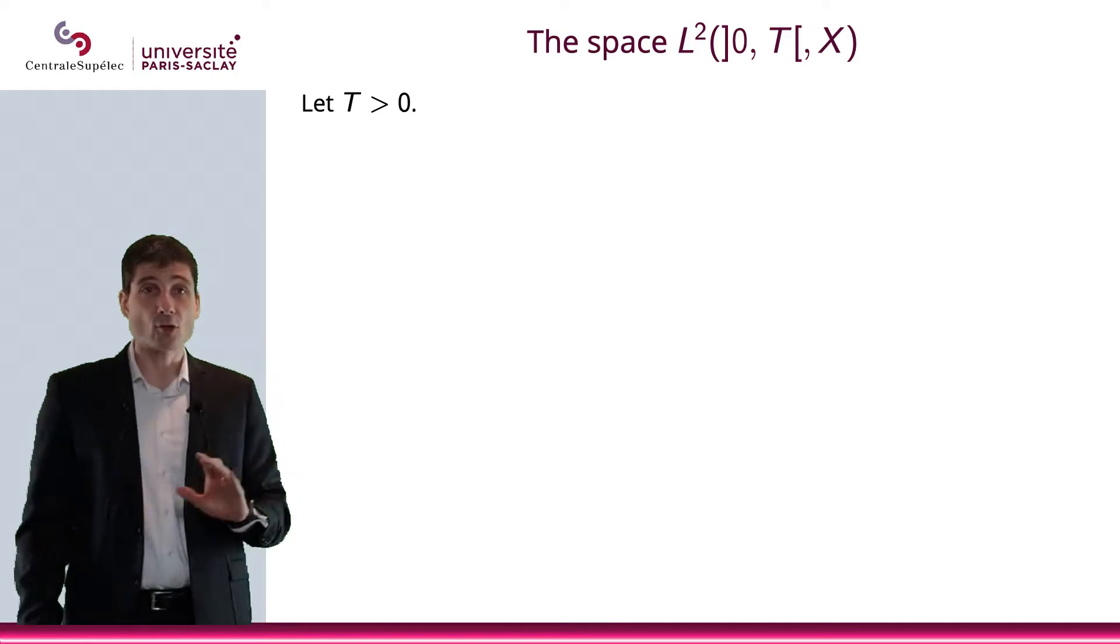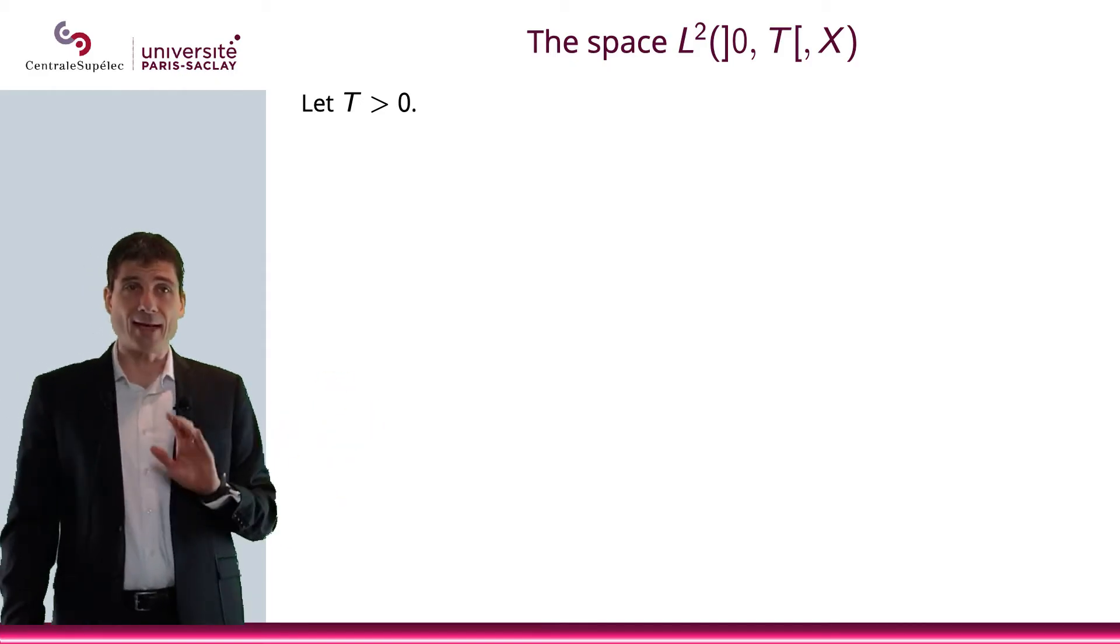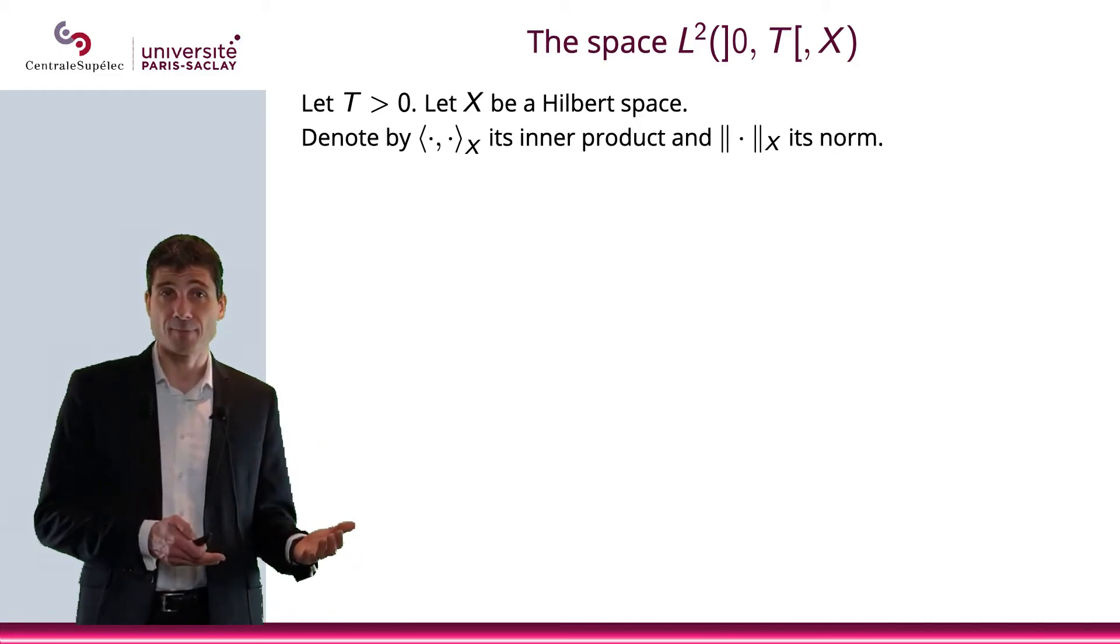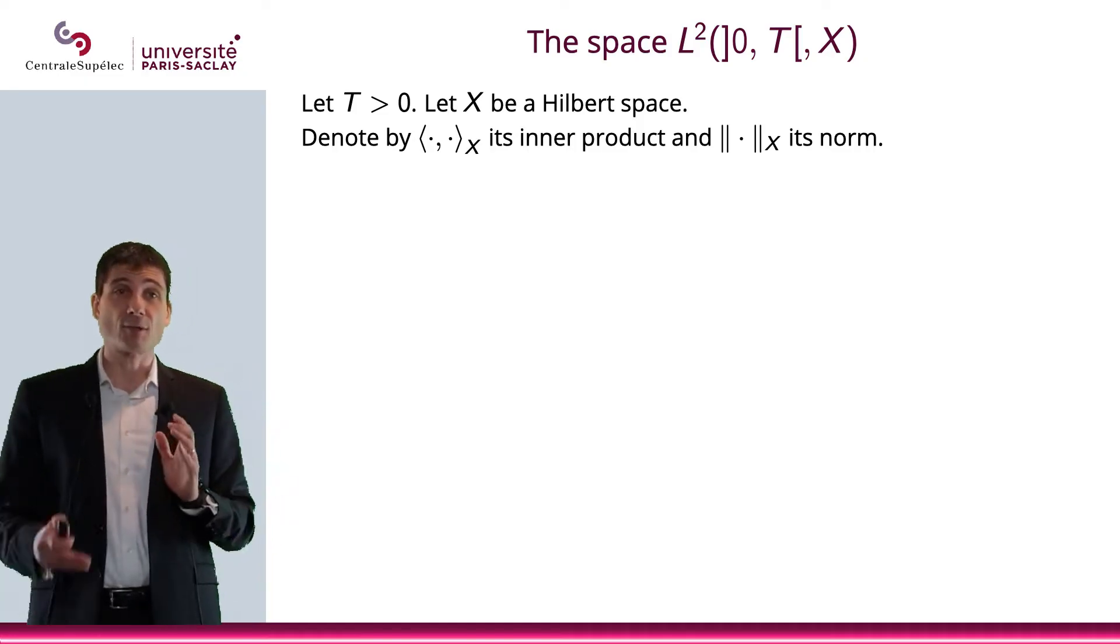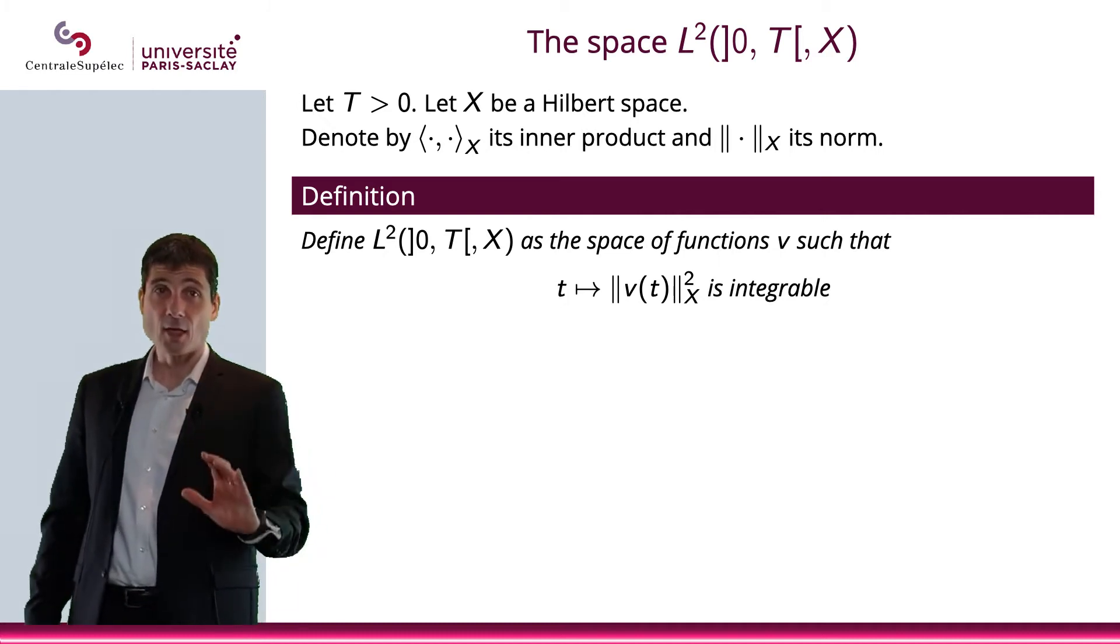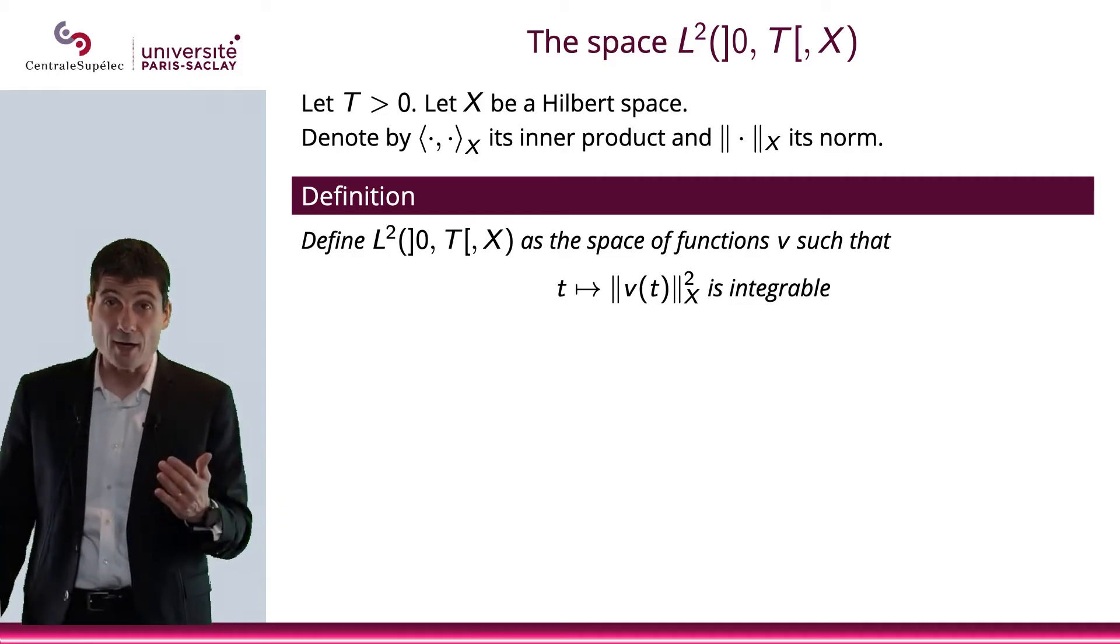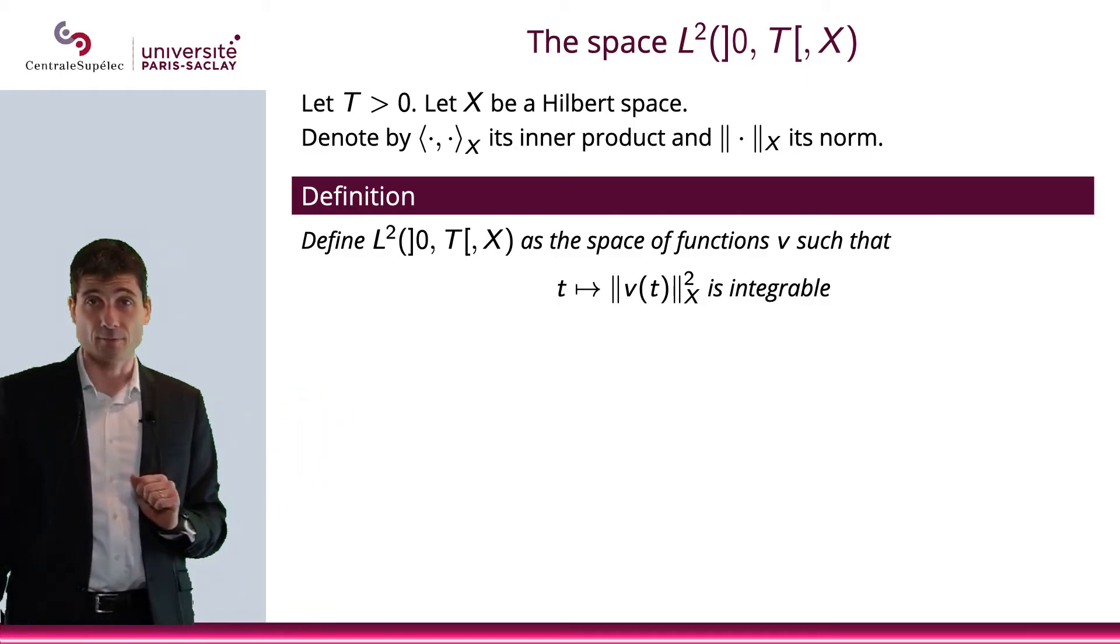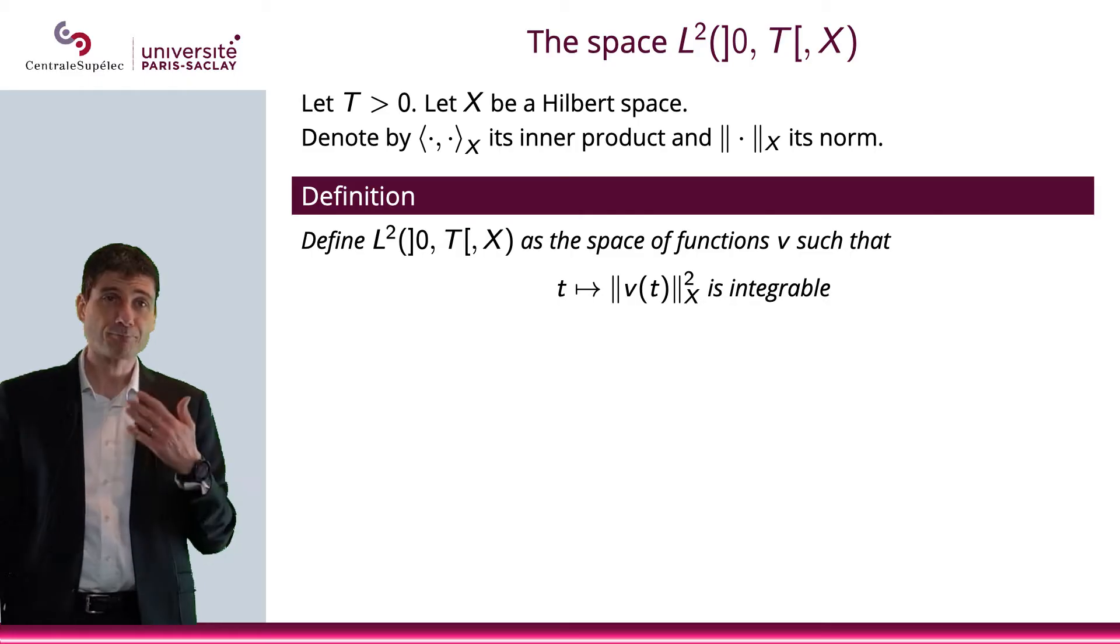All right. Now, let me define the space L²(0,T,X). So first, let capital T be a positive number. And let X be a Hilbert space. Now, as you know, in a Hilbert space, I have an inner product. And, of course, I have a norm. So the inner product is here, the norm is over there. Now, let me define the space L²(0,T,X) as the space of all functions v such that the function t gives the norm of v(t) in X squared is integrable. That will be the definition of the space L². And, of course, I could define L^p by replacing L² by L^p and the square by power p.